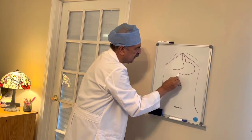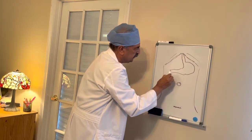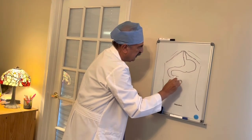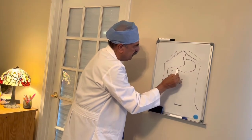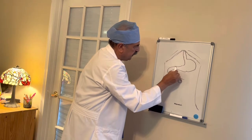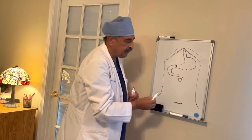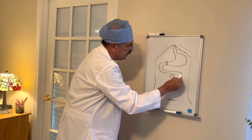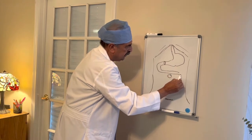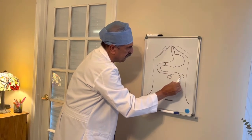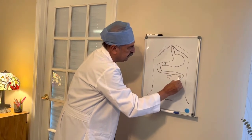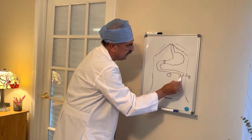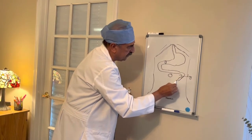The stomach comes down like this and finishes here. This is called the pylorus. This is the duodenum, which goes here and comes into the abdomen. There's a structure called the ligament of Treitz right here.